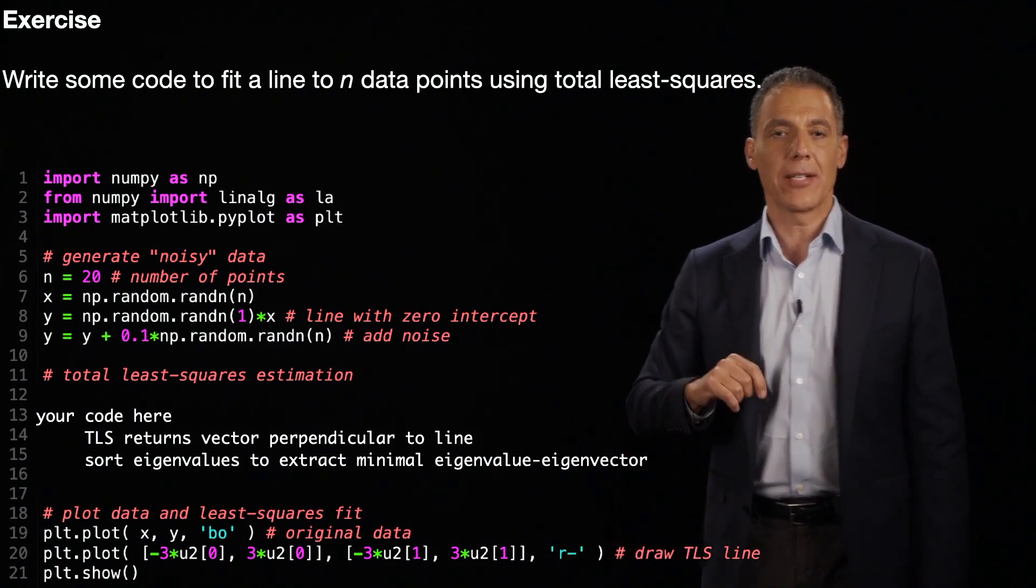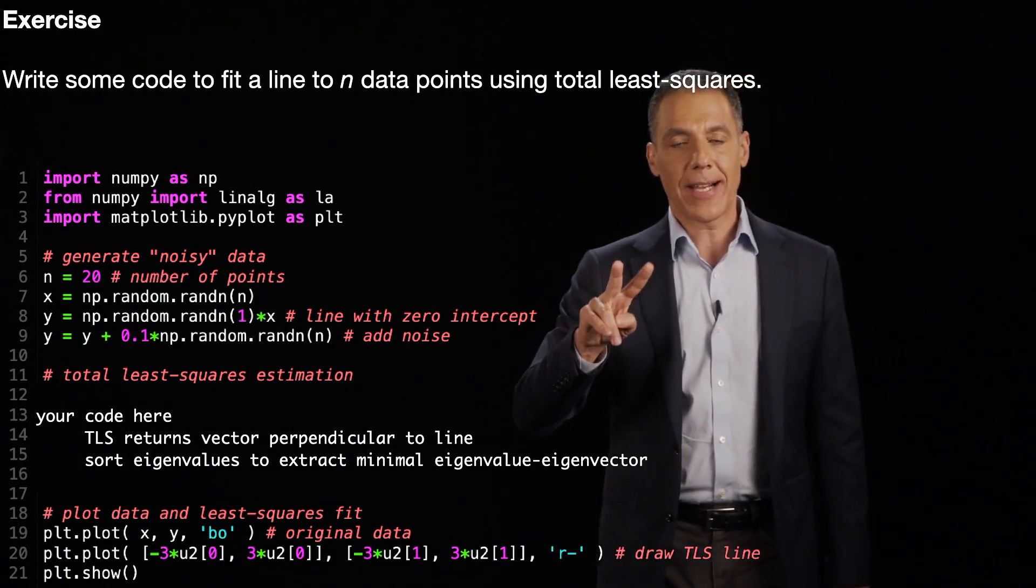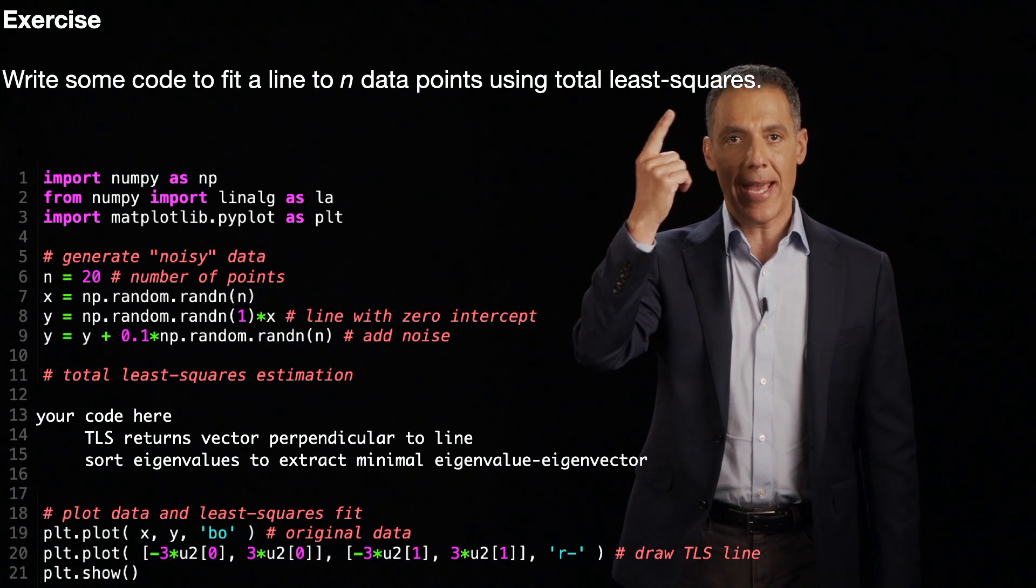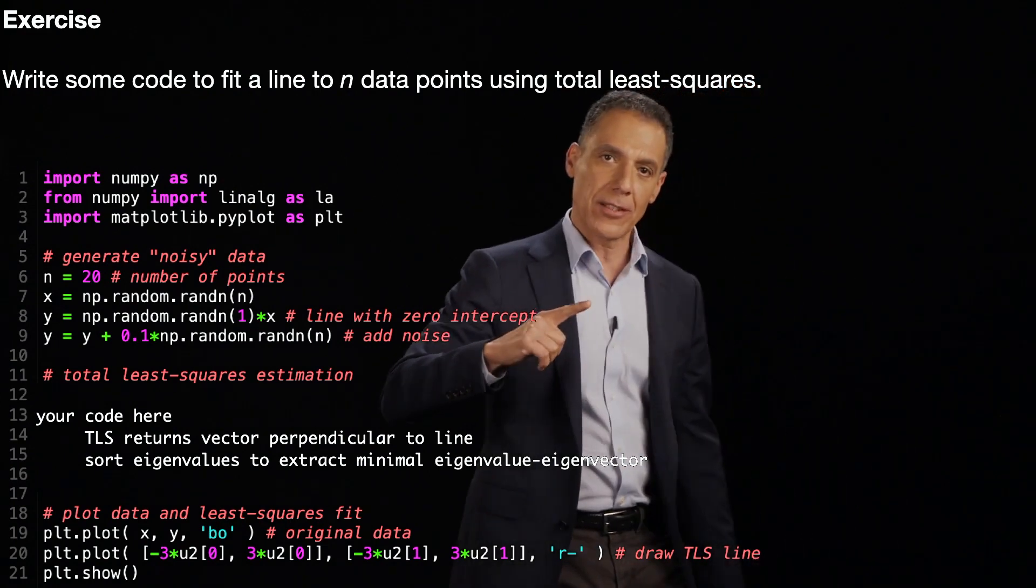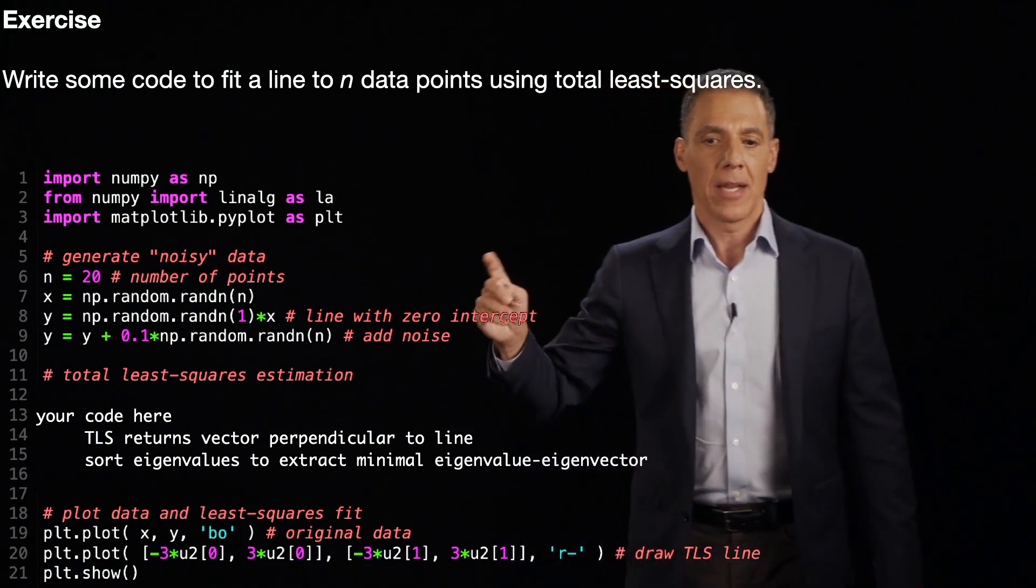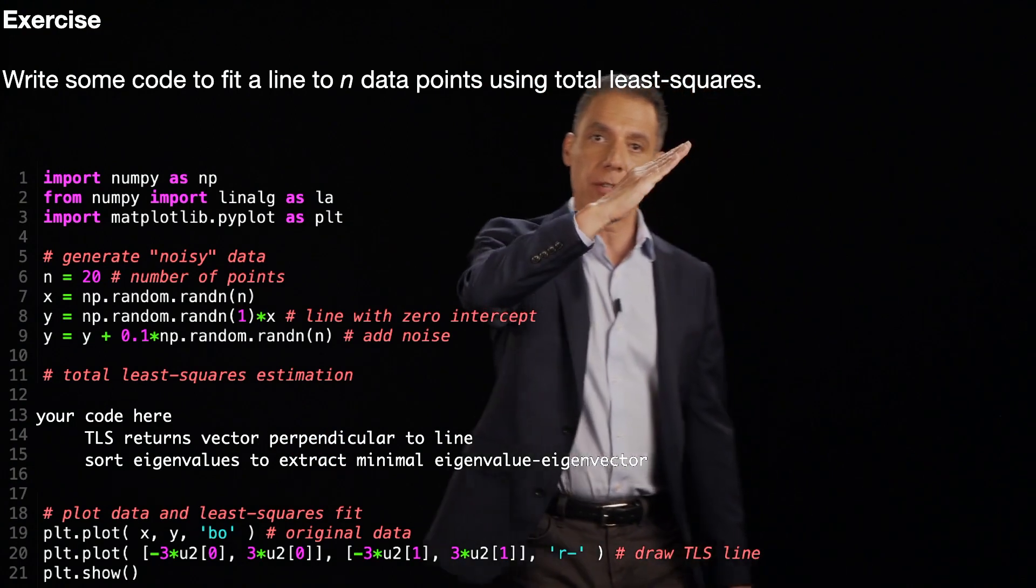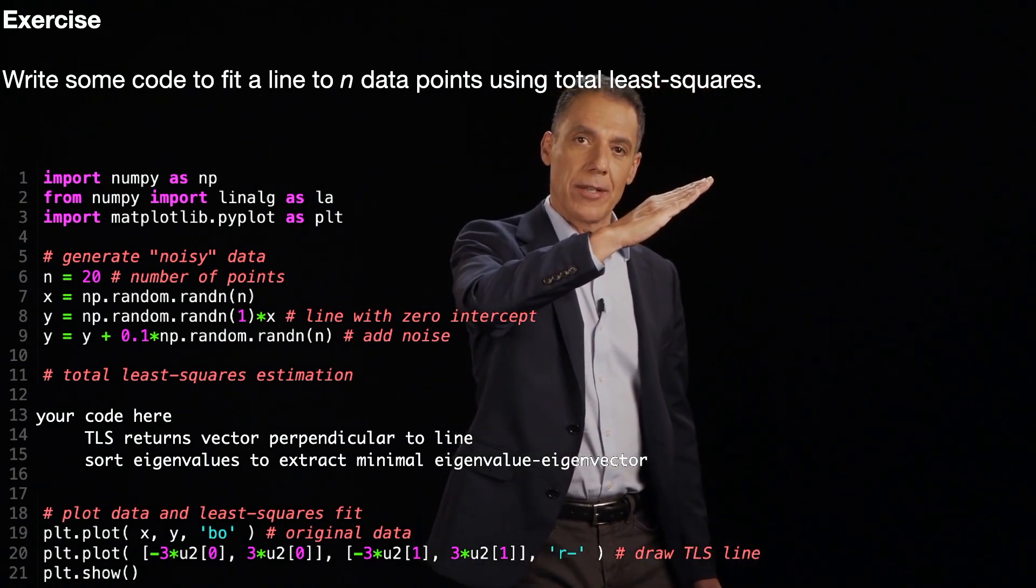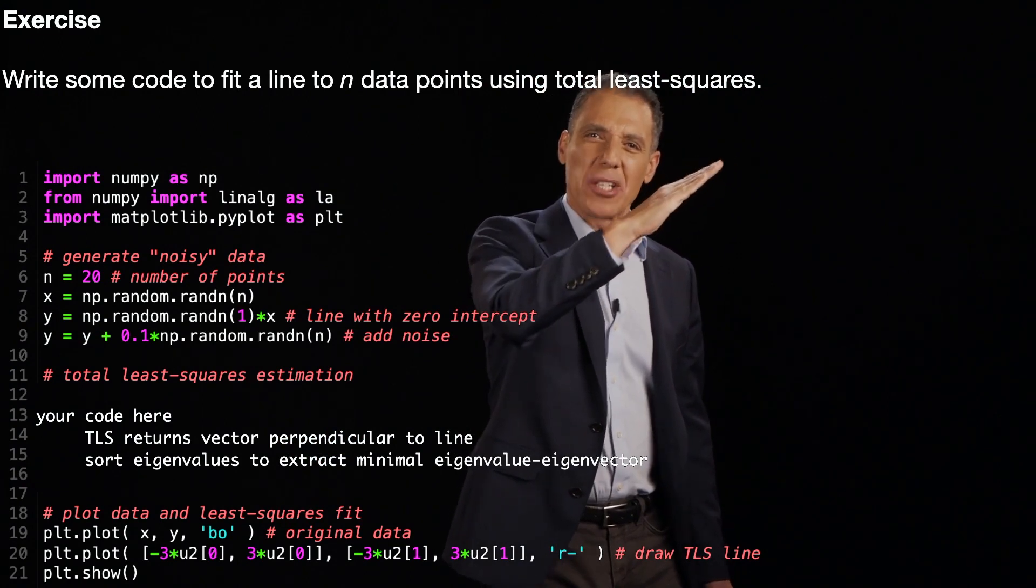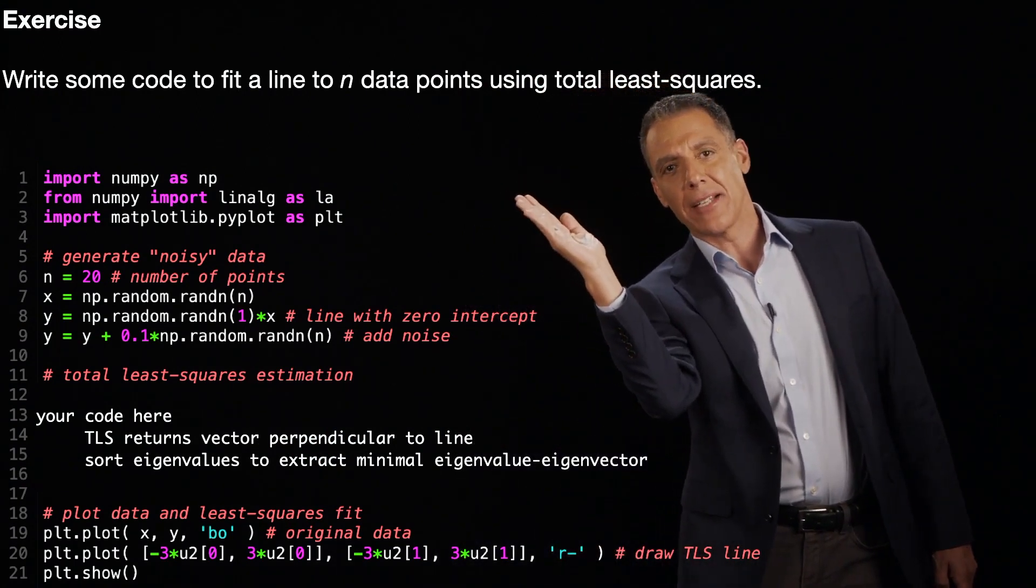Now, a couple of things to remind you here what's going to come out the other end. So you're going to generate a vector for me called U again, and U should have two components, A, B, which is the vector that is perpendicular to the line. Now, remember, total least squares doesn't return the line. It returns the vector that is perpendicular to it. So if you want to draw the line through the data points, you can't draw what comes out of total least squares. You have to rotate it by 90 degrees.